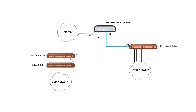We're going to start this demonstration by taking a look at the process to create LAGs on the Ruckus WAN gateway. Right now we have one connection from IGB1 down to port 12 on our lab switch 20. We're going to add another physical interface connection to port 10 on that switch up to IGB2 and then make that a LAG interface. From there we're going to create some VLAN interfaces within the lab network infrastructure so we can get some segmentation across the connected devices.